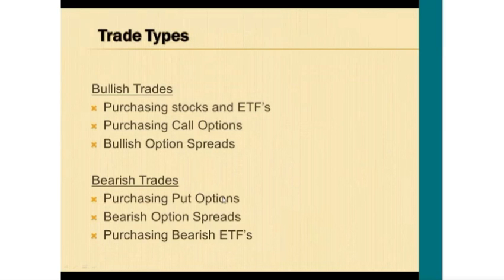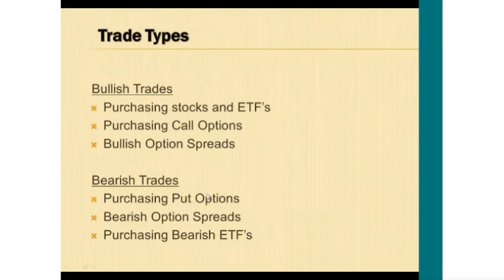When a stock or ETF is on a buy signal with the 50-day EMA above the 100-day EMA, we take bullish trades — we can purchase stocks and ETFs, call options, and bullish option spreads. When a sell signal is indicated, we want to be purchasing put options, bearish option spreads, and bearish ETFs. Today we're going to be looking at purchasing stocks and call options using Prime Trade Select.